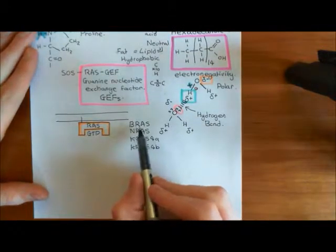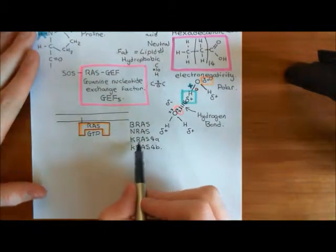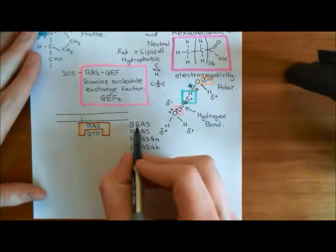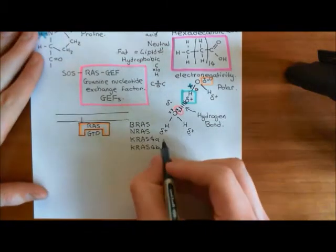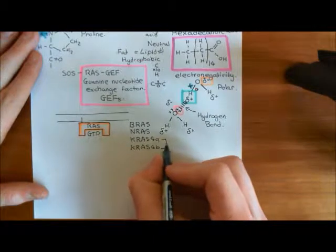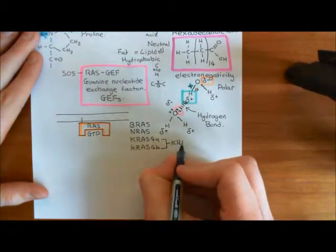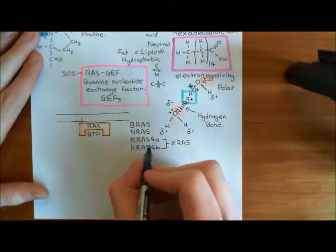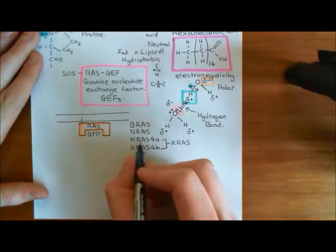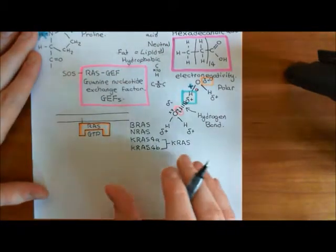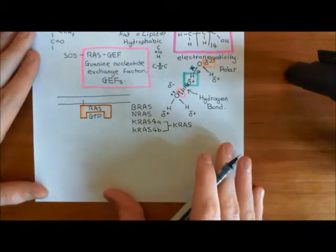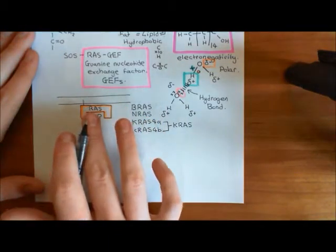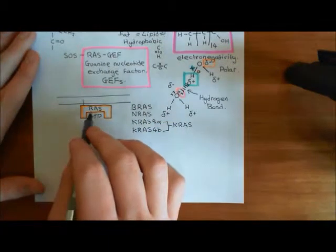There are four different types of RAS protein: HRAS, NRAS, KRAS-4A, and KRAS-4B. KRAS-4A and KRAS-4B are the two separate splice variants of the single KRAS gene, which can produce two different proteins by splicing the mRNA in different ways. As far as we're concerned, all four of these RAS monomeric G proteins do the same thing, so we're not going to distinguish between them — we'll just write RAS.